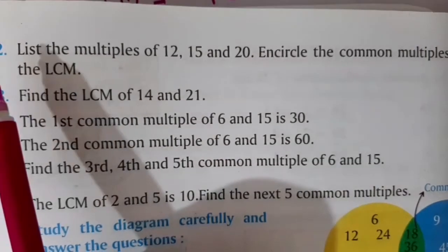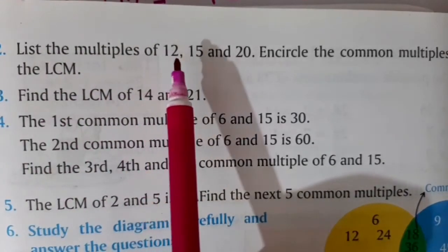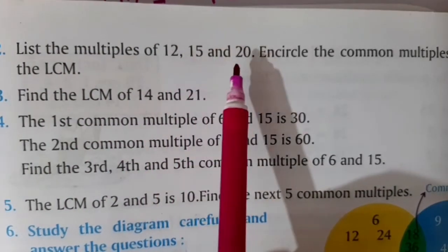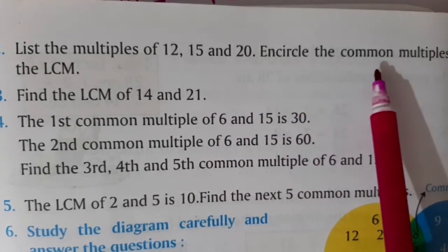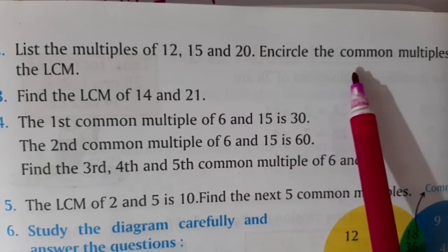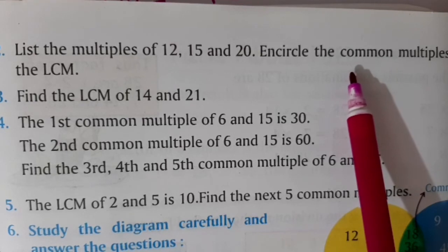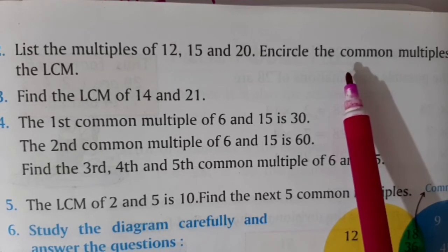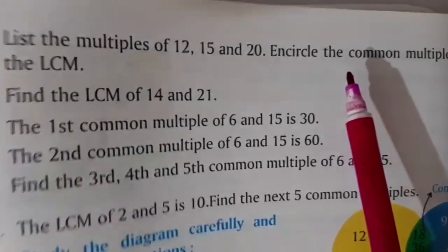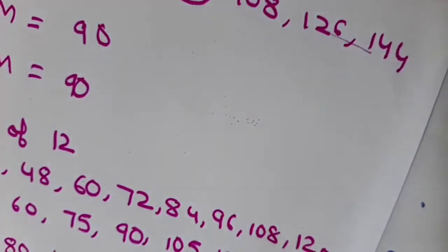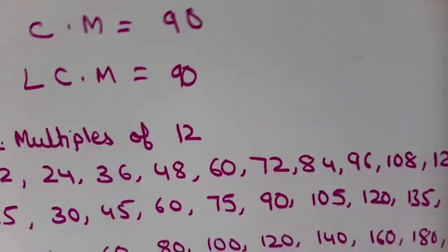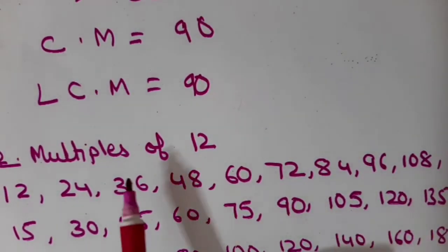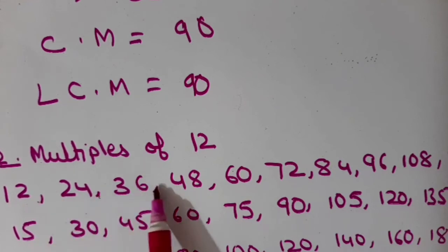Question number 2: list the multiples of 12, 15 and 20, encircle the common multiples, and then find the LCM. Students, here first we will write the multiples of 12, 15 and 20. First I will write the multiples of 12: 12, 24, 36 — these are the multiples of 12.